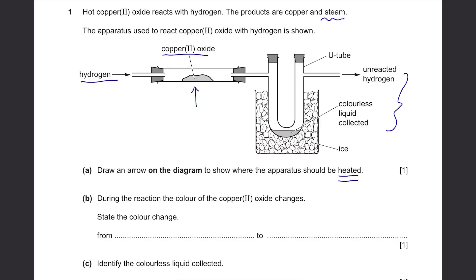Part B: During the reaction, the color of the copper(II) oxide changes. State the color change. The products are copper and steam. You can see that there's no copper to be found around this area, so copper will just stay here. And from this, we can know that it's going to change from copper(II) oxide to copper. The color of copper(II) oxide is black and the color of copper is brown. So it's from black to brown.